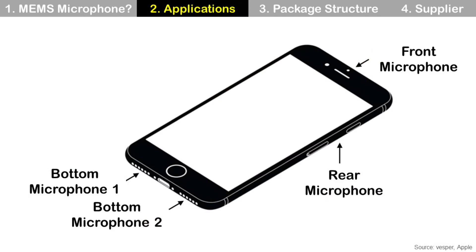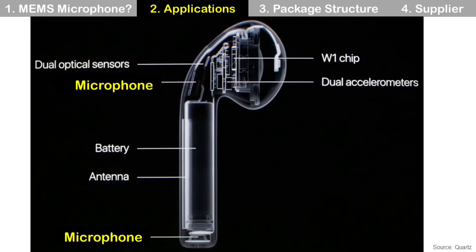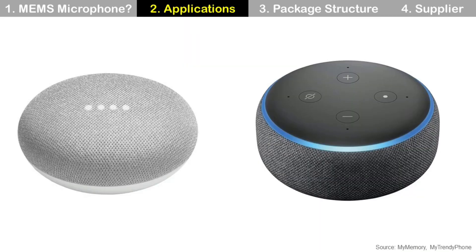As mentioned before, multiple microphones are used in smartphones. Wireless earbuds like Apple AirPods and Samsung Galaxy Buds also use microphones. We can find microphones in AI speakers like Google Home and Amazon Echo.